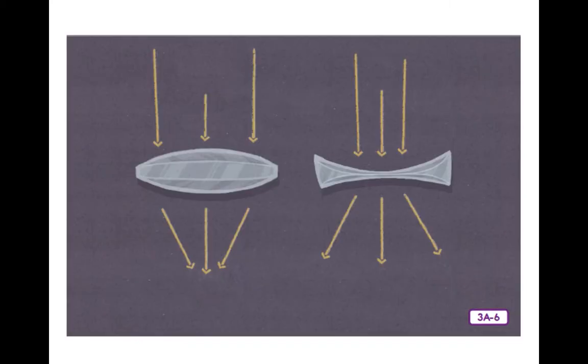Samuel went on: 'A convex lens curves outward so that it is thicker in the middle than at the edges. Rays of light passing through a convex lens are forced to change direction and move toward each other, making things look bigger if they are close enough to the lens. Convex lenses are used in instruments such as microscopes, magnifying glasses, binoculars, telescopes, and cameras. The lenses in my eyeglasses are convex, to help me see close images better when I'm painting.'